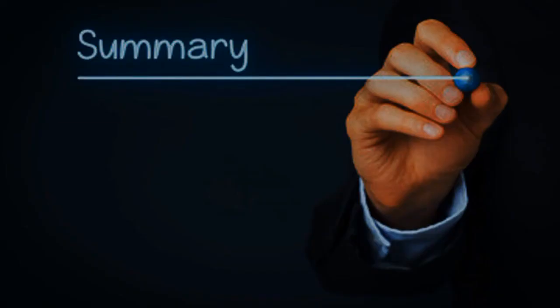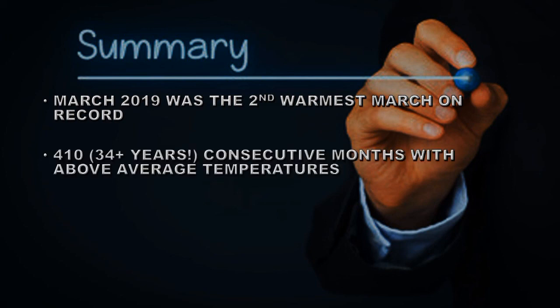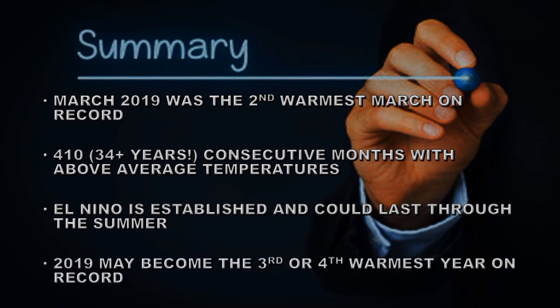In summary, March was the second warmest March on record. We've had 410 consecutive months with temperatures above the 20th century average — that's over 34 years. El Niño is well established and could last through the summer. And 2019 may well become the third or perhaps the fourth warmest year on record based on its performance so far.